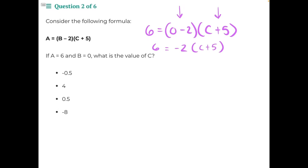Now we need to use distributive property to multiply negative 2 into C and into positive 5. So negative 2 times C would give us negative 2C. Negative 2 times positive 5 would give us a negative 10, and then bring down our equal sign and our 6.